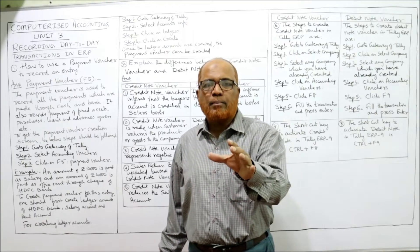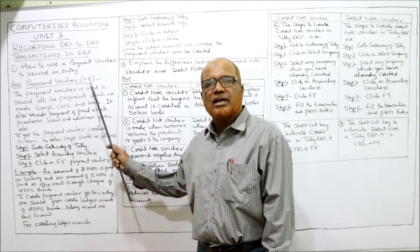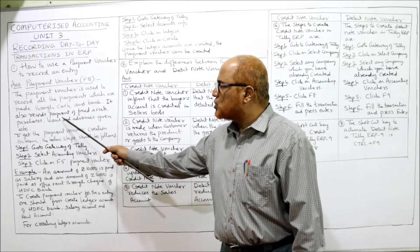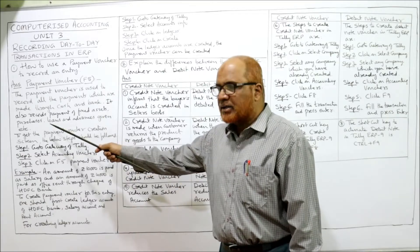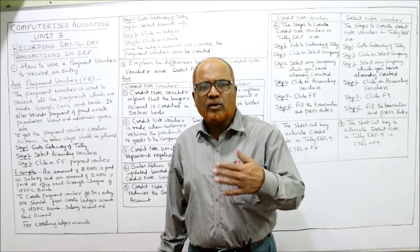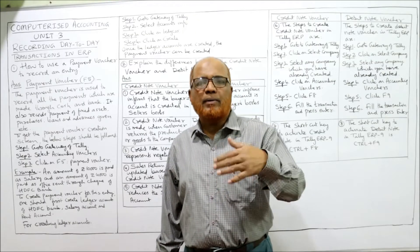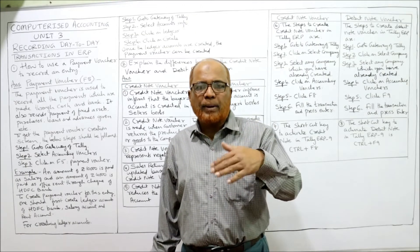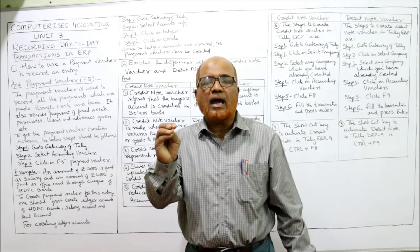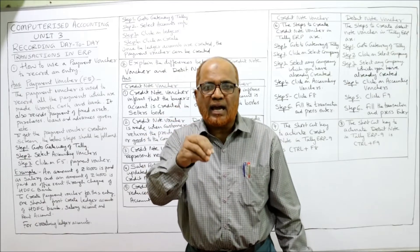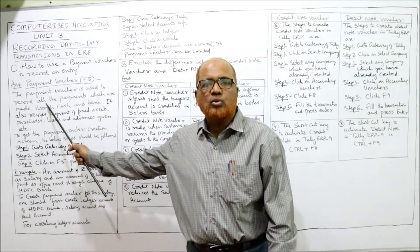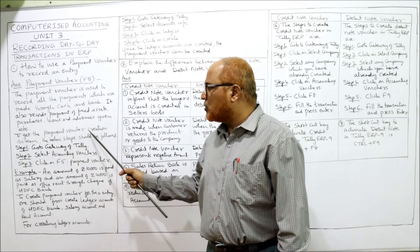The payment voucher also records payment of fixed assets, purchases, loans and advances given, payment of salary, payment of rent, payment of electricity bill, or purchase of fixed assets. Whenever any amount is paid either in cash or through bank, we can enter the transaction in the payment voucher using function key F5.